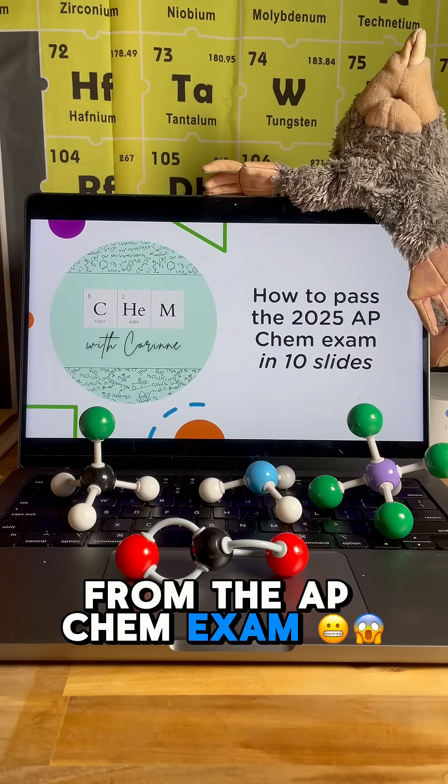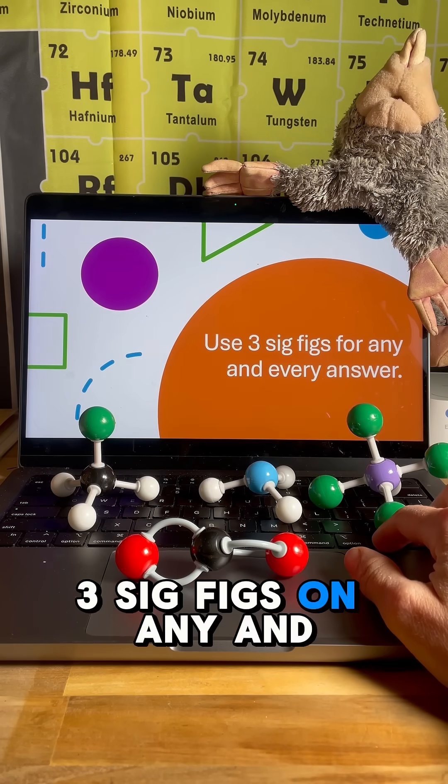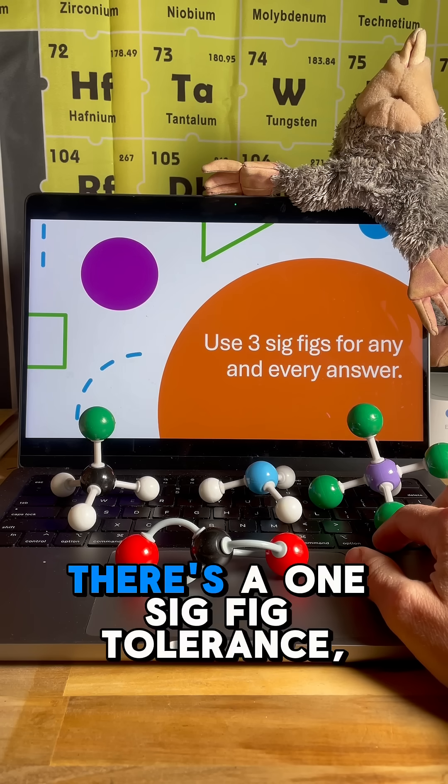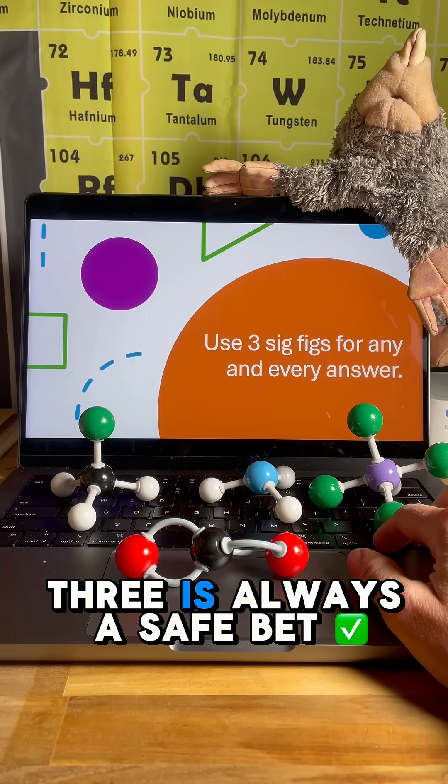We are about two weeks out from the AP Chem exam, so let's talk about how to pass it. First of all, you're going to use three sig figs on any and every single answer. There's a one sig fig tolerance. Most numbers are going to have between two and four. Three is always a safe bet.